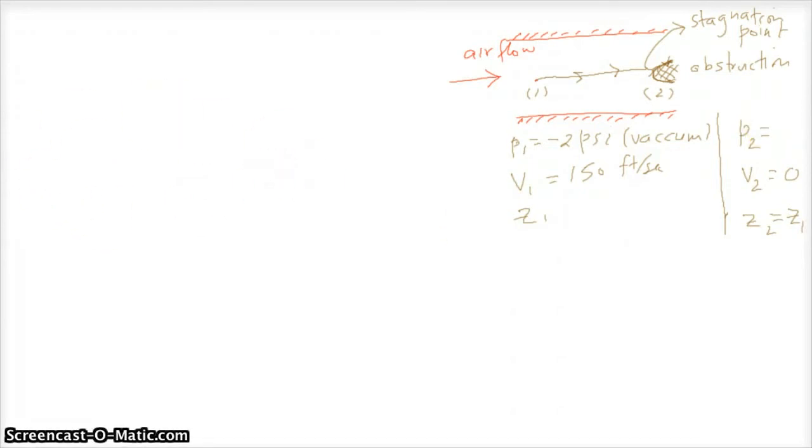Stagnation pressure P2 is what we need to determine. Now using Bernoulli equation, we can write P1 over gamma plus V1 squared over 2G plus Z1 equals P2 over gamma plus V2 squared over 2G plus Z2.